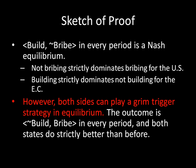Now I'm going to show that both sides can play a grim trigger strategy in equilibrium. The United States starts out by bribing and will continue bribing as long as the evil country does not build. If the evil country builds in any period, the United States will switch over to not bribing in every single period. On the other hand, the evil country will begin by not building, and as long as the United States bribes in every period, the evil country will continue not to build. But if the United States does not bribe in a period, then the evil country will switch over to building in every period.